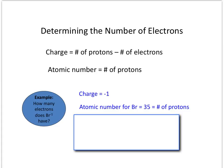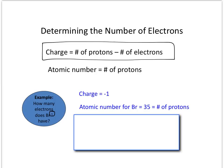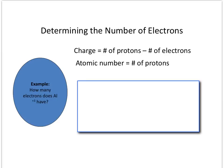So let's try an example. How many electrons does the bromide ion have? The first thing we're going to find is the charge of the bromide ion, which is minus 1, and we'll plug it into the equation. Minus 1 is equal to the number of protons — the atomic number is 35, which is the number of protons for bromine — minus E. So we move the 35 over to the other side, and that gives us an answer of 36 electrons.